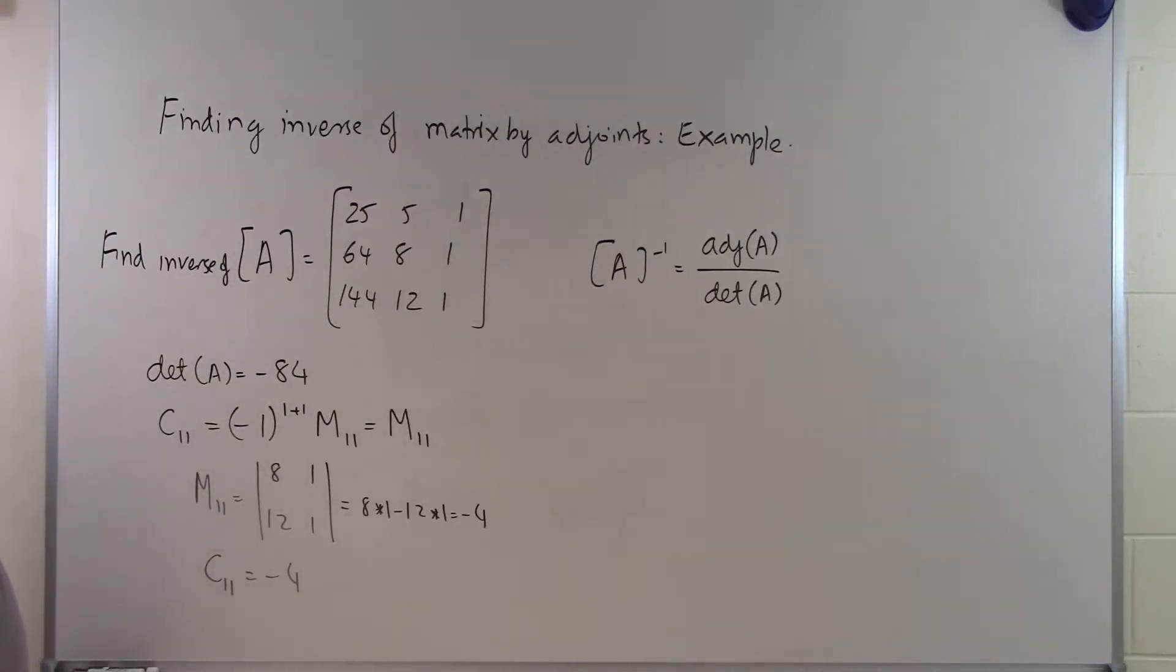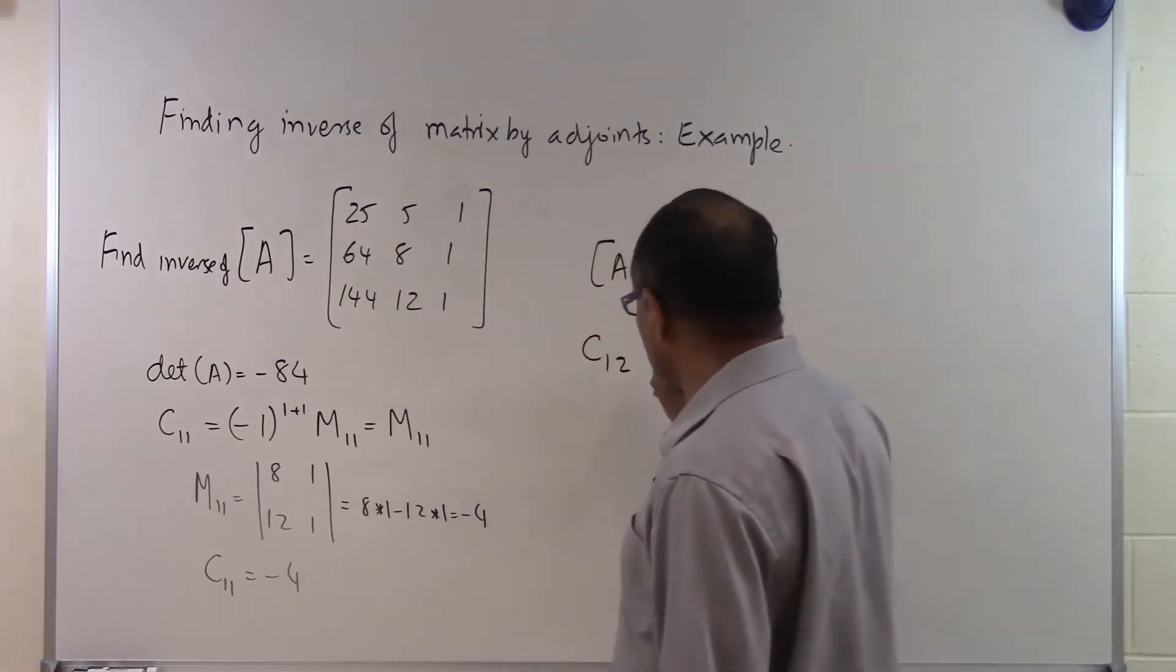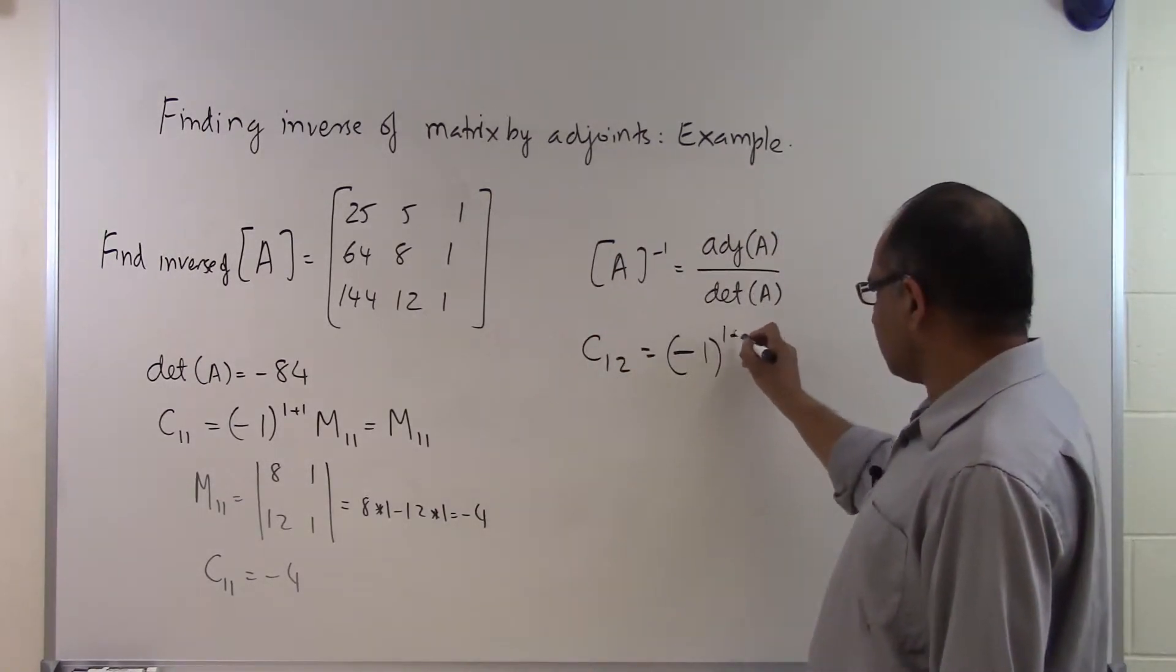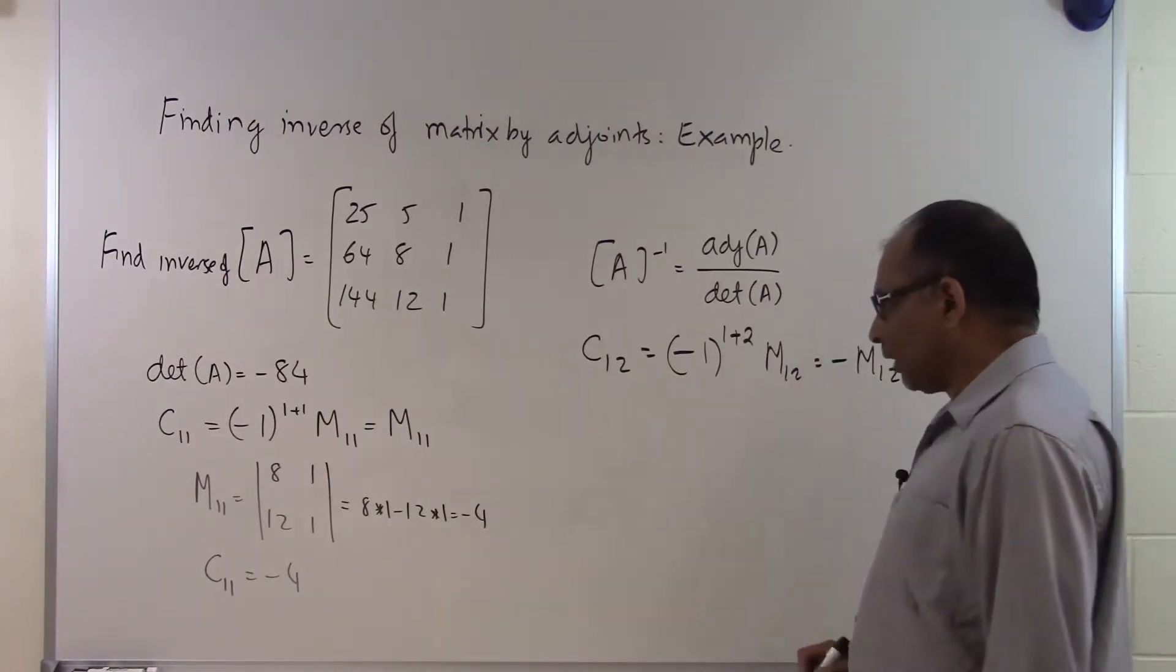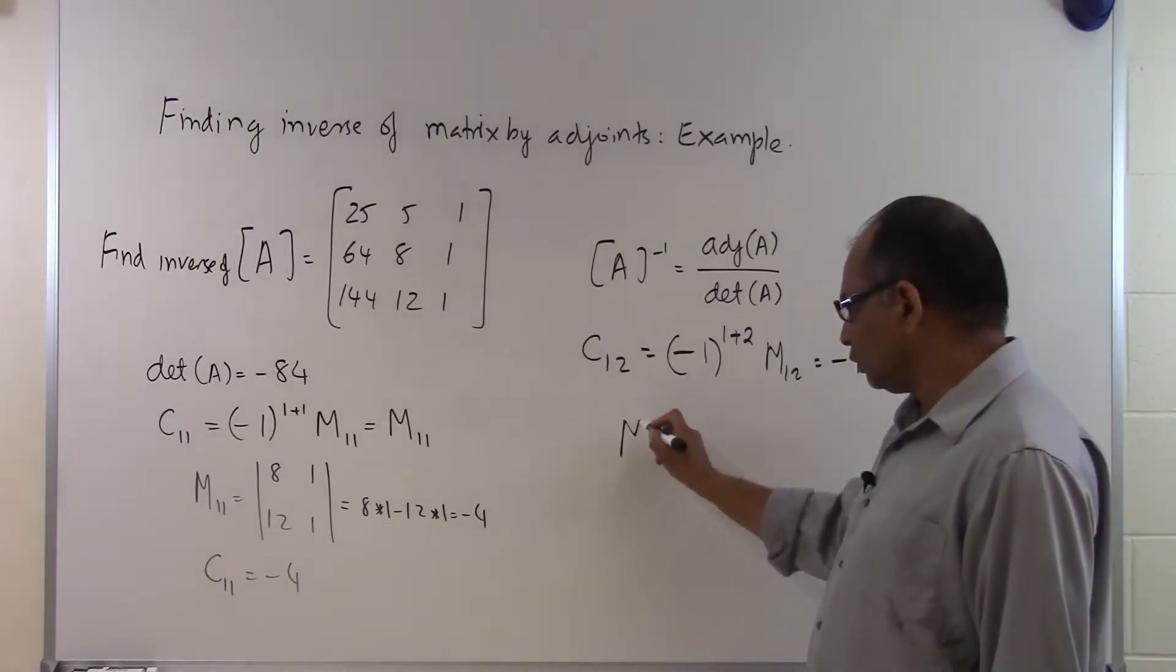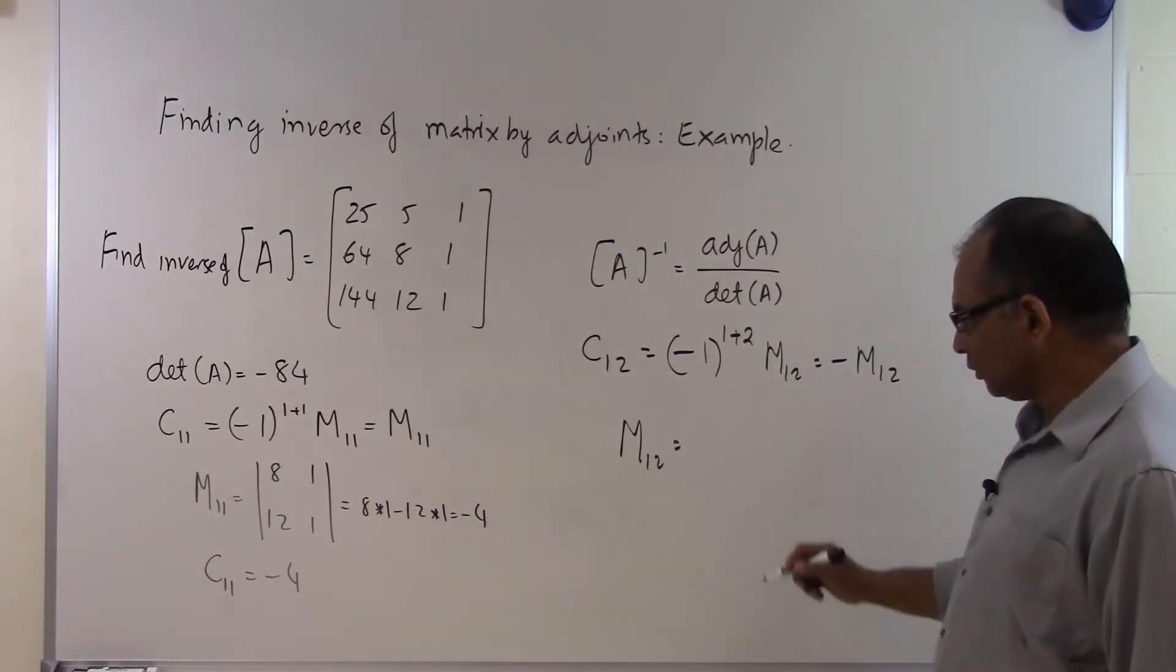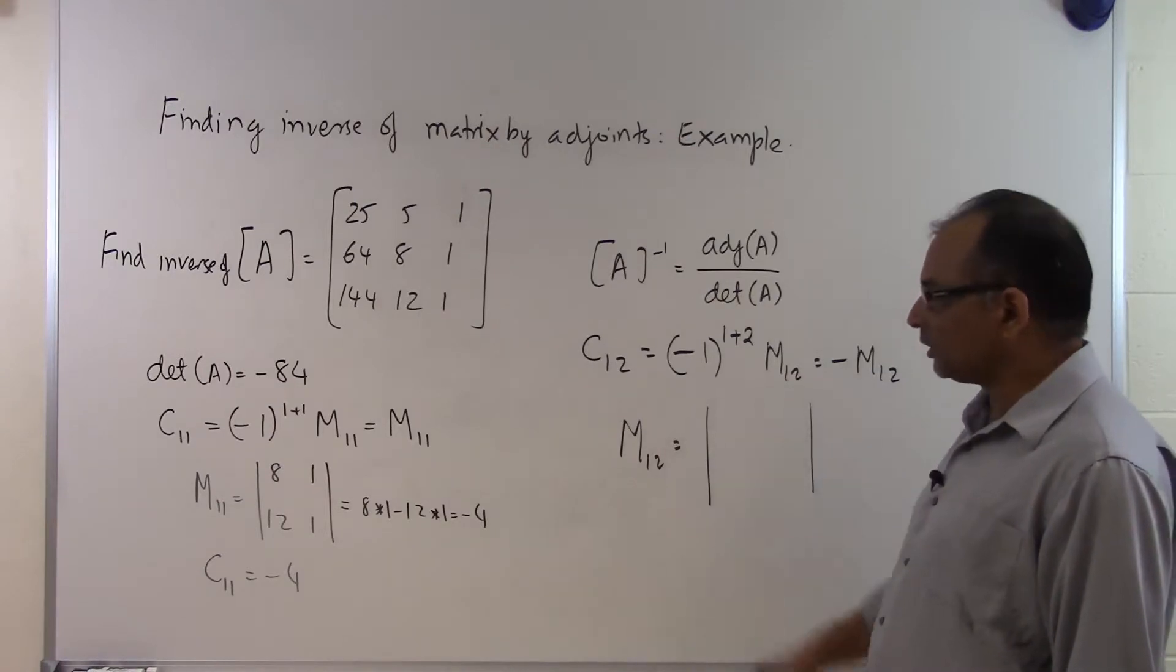Let's find out another cofactor corresponding to C12. C12 will be minus 1 raised power i plus j, which will be 1 plus 2, M12, and that will be minus M12. M12 will be the minor of the matrix corresponding to the A12 element. It will be the determinant of the matrix which is left over once I take the first row out and the second column out.